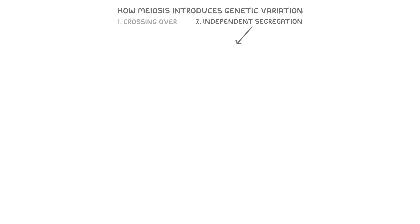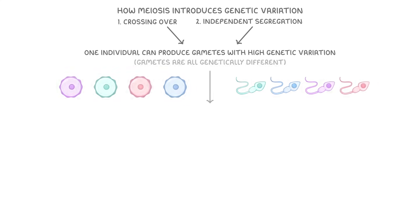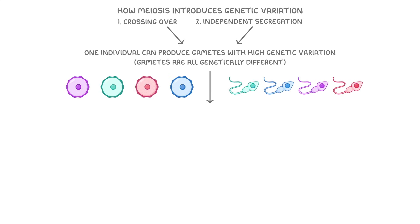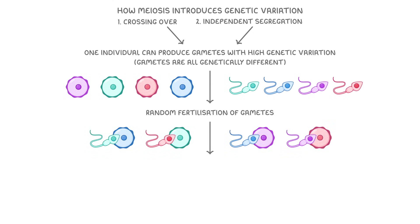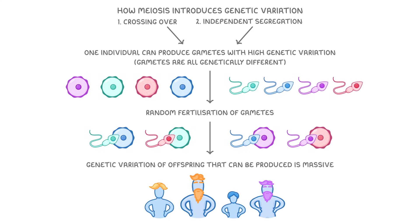Overall, if we take both independent segregation and crossing over into account, it means one individual can produce gametes with really high genetic variation — in other words, their gametes are all genetically different from each other. And then on top of that, random fertilisation of these gametes afterwards means the genetic variation of offspring that can be produced is absolutely massive.